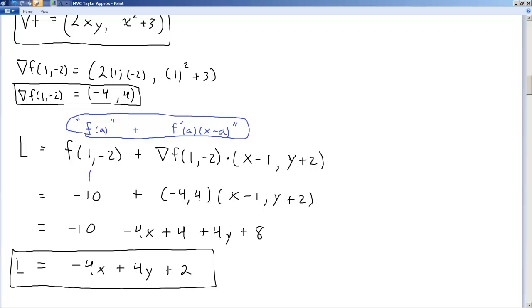In multivariable calculus, the equivalent is the function evaluated at the vector. This gradient represents the first derivative evaluated at the vector. And then x minus a becomes this vector, this difference vector, here. So you go through.